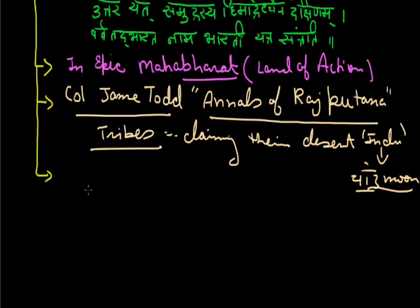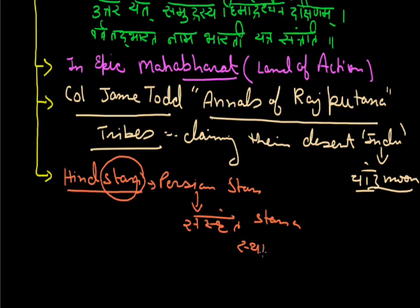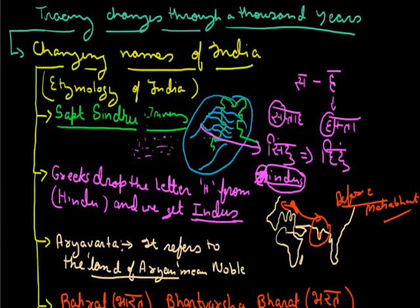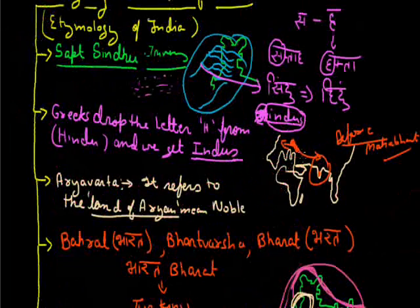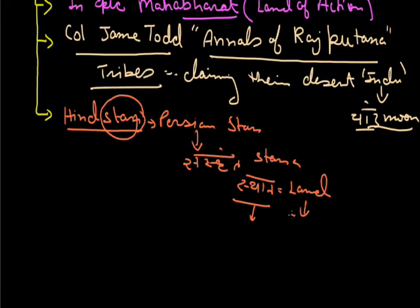The next famous name is 'Hindustan.' The word 'Stan' is a Persian word — in Sanskrit it is 'Sthana,' meaning land. So the Persians said 'Hindustan' — Sindhustan, meaning the land of the Hindus. We can also see this suffix used in Kazakhstan, Kyrgyzstan, Turkmenistan, Uzbekistan, Afghanistan, and Pakistan. Similarly in English we see 'land' used in England, Scotland, Ireland, and Netherlands. Persians used 'Stan' for India as 'Hindustan.'